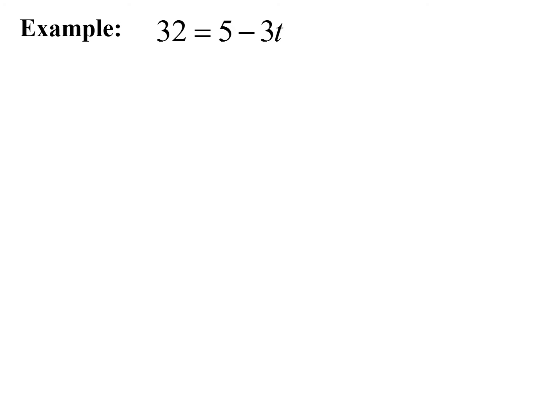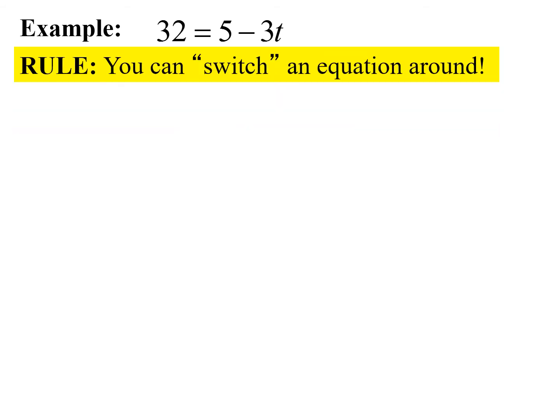Our third example: 32 equals 5 minus 3t. This is a little different because our variable term is on the right-hand side. We typically prefer the variable on the left so that as we read it, we identify what it is — 't equals blank.' Another rule: we can always switch the equation around so the left side becomes the right and vice versa. So 5 minus 3t equals 32, keeping the order of terms intact.